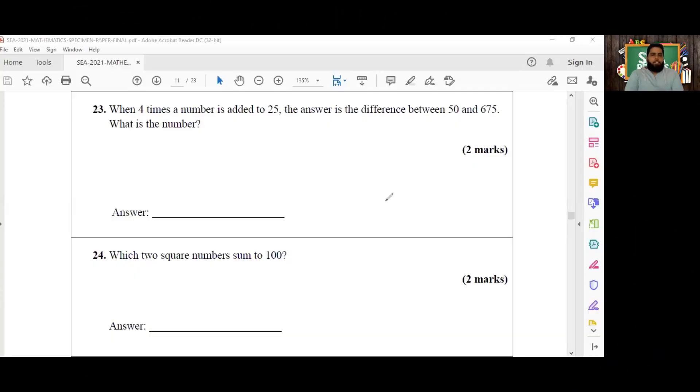All right guys, so here's our final question for today, number 23. When four times a number is added to 25, the answer is the difference between 50 and 675. What is the number? So first of all, we're going to find out what the difference between 50 and 675 is. The difference, of course, means that we're going to subtract. So we'll say 675 take away 50, which is going to give me 625.